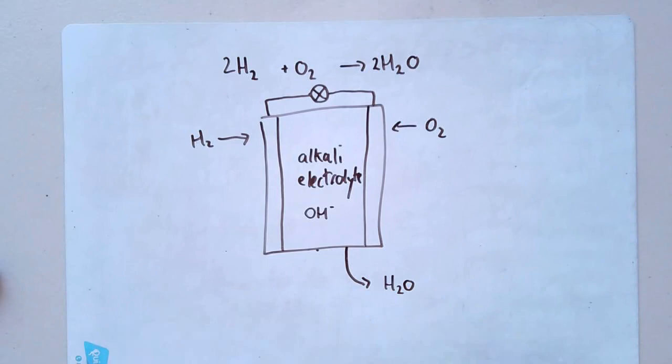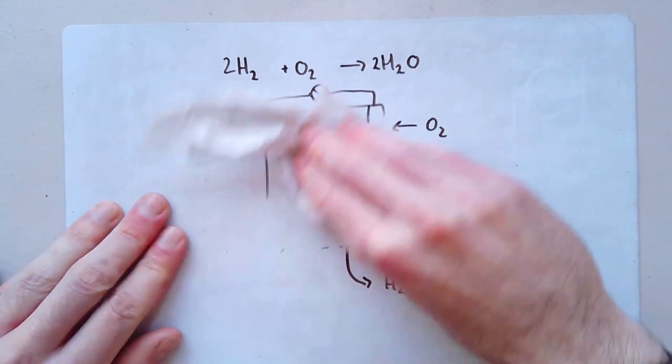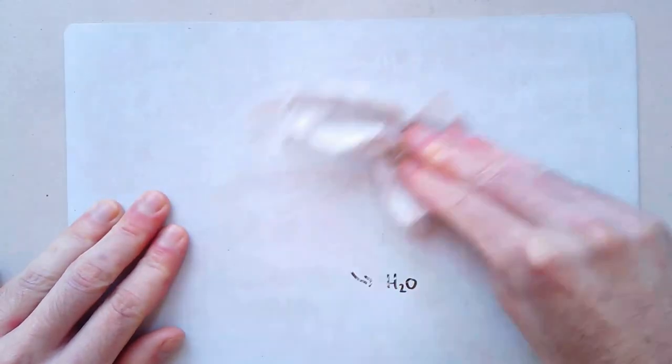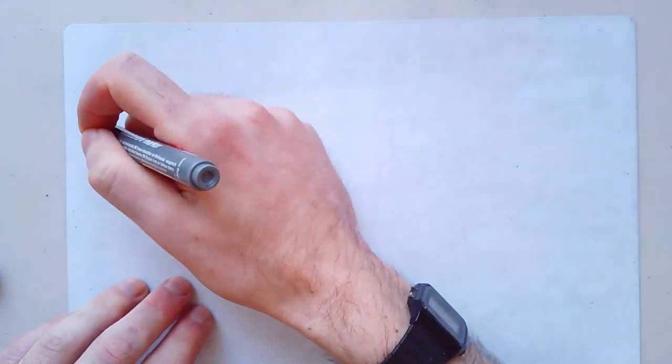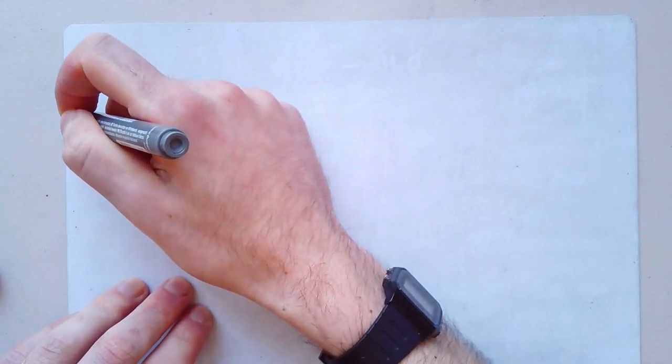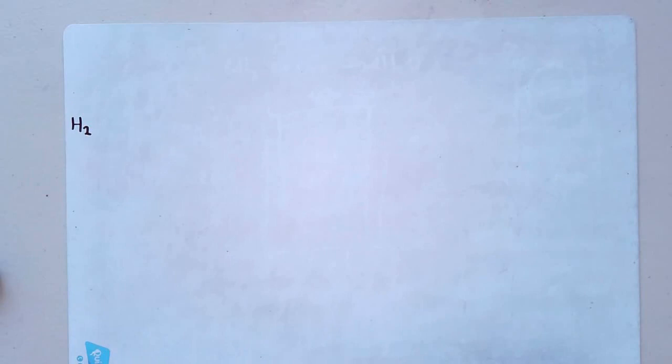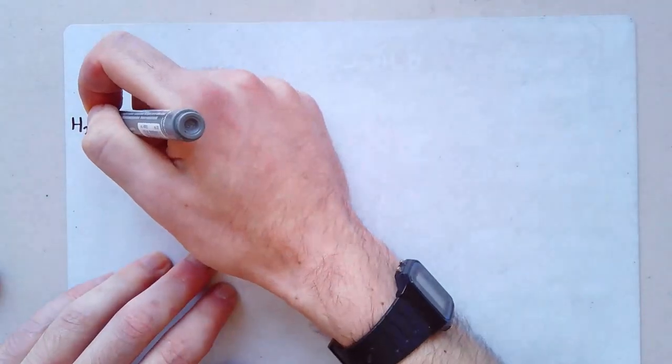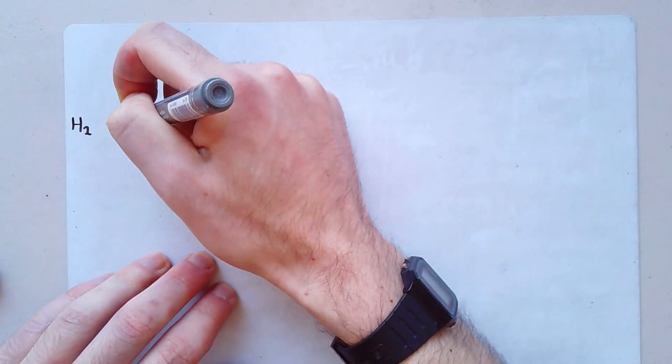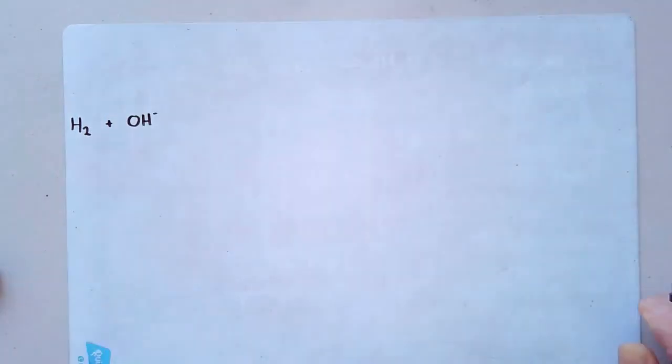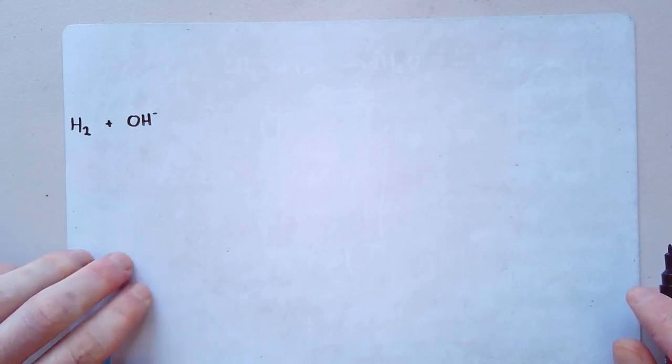Let's make things a bit more complicated. So we start off at one side. I'm going to have to use my whole board for this with hydrogen. The hydrogen reacts with some of that OH minus. The OH minus comes from the electrolyte.